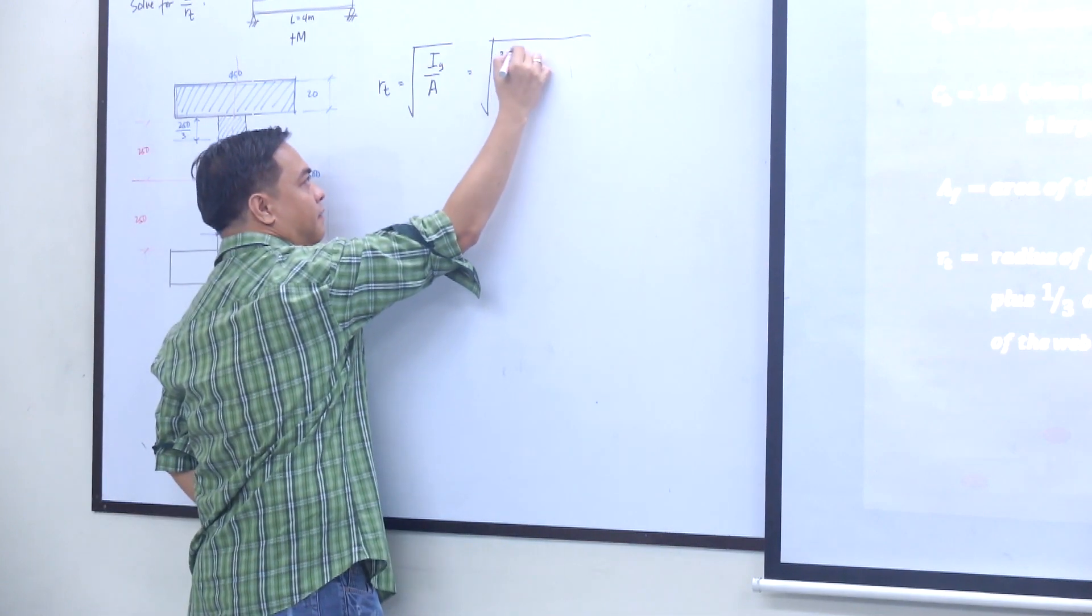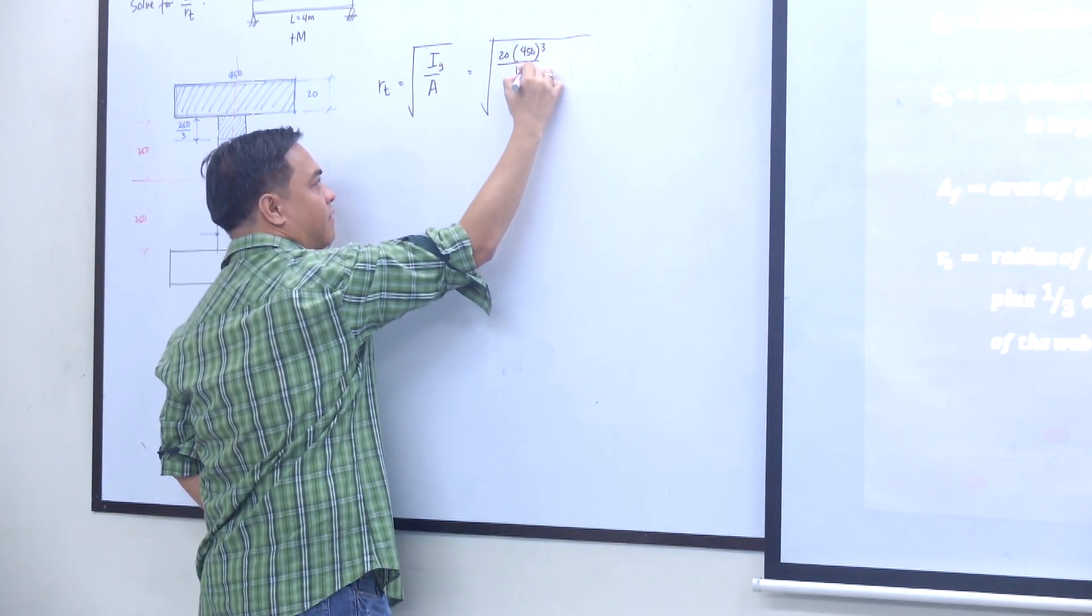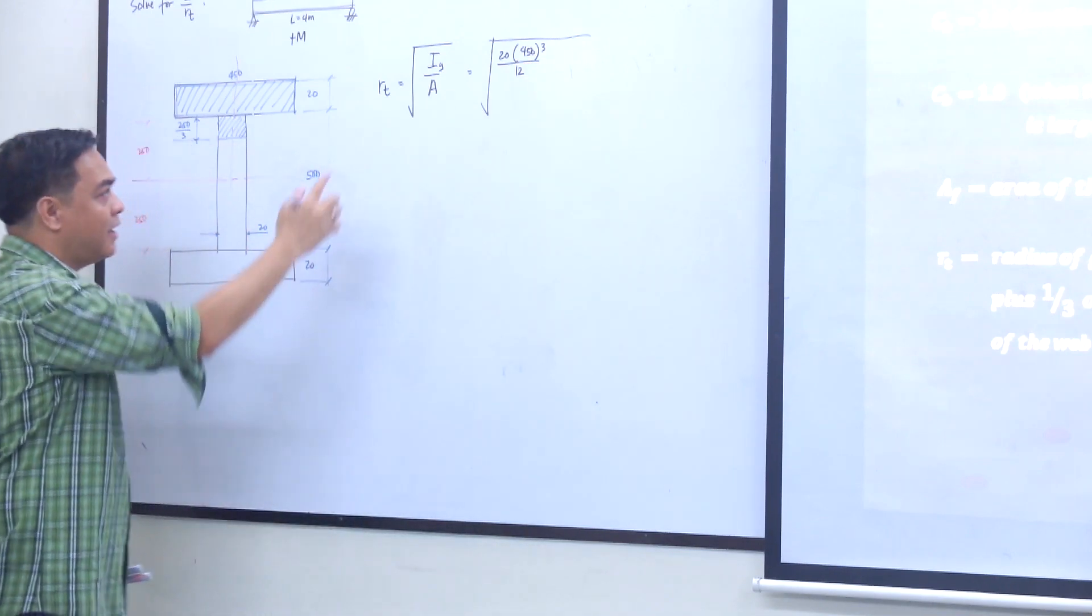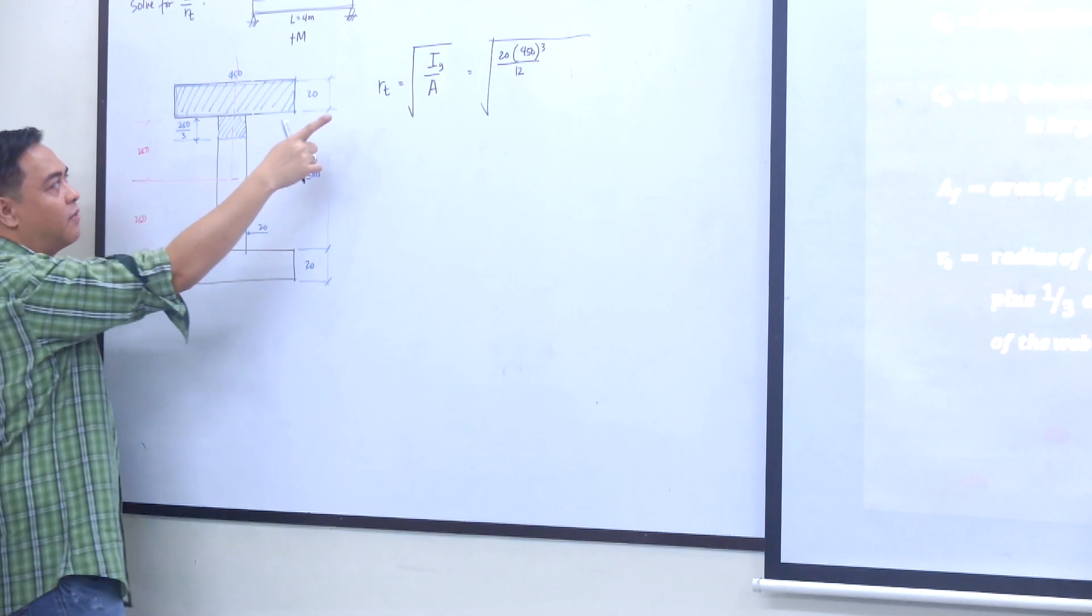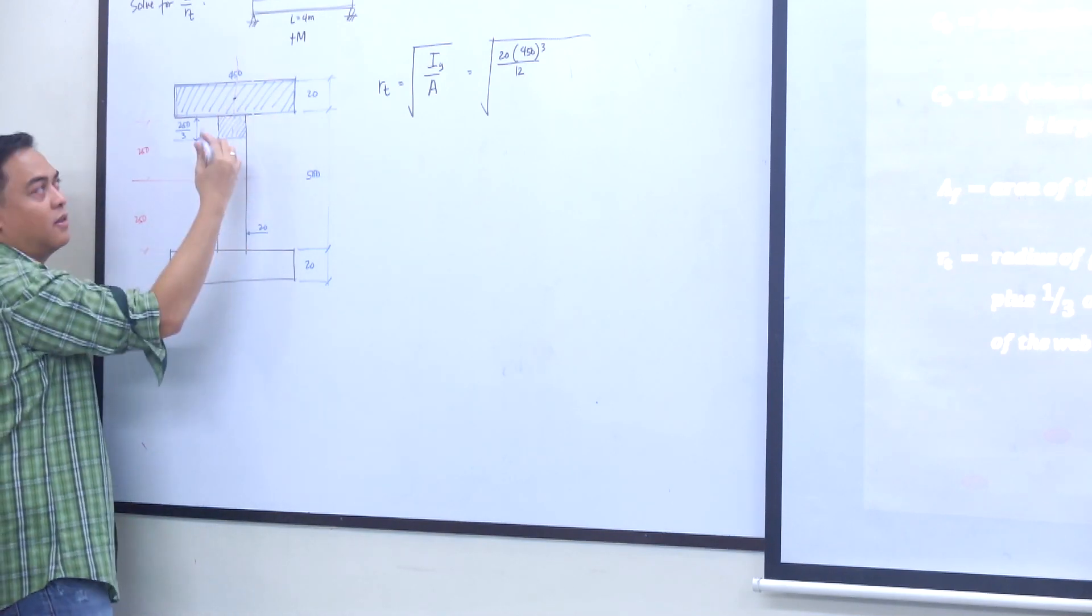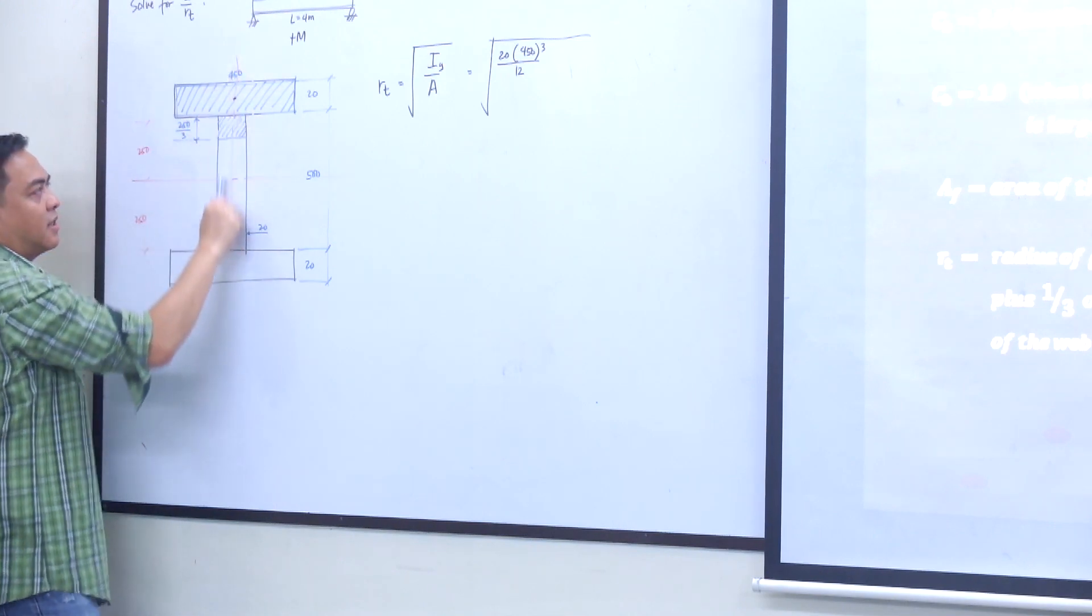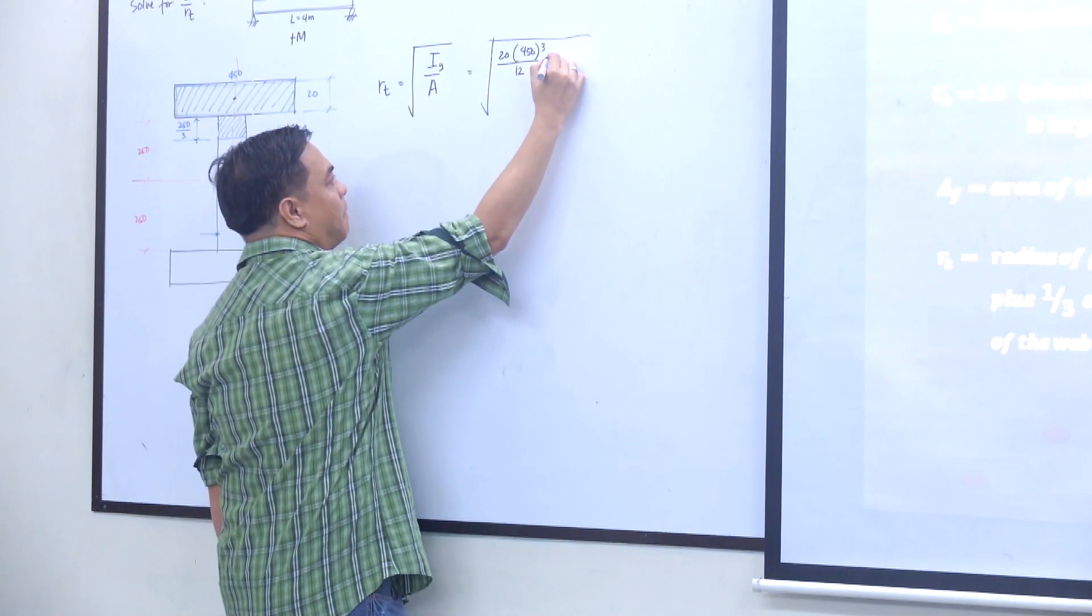450 times 20 cubed over 12. I need to transfer that inertia. Where is the centroid of that flange? Here. So I need to transfer it down. The axis is on the plane of the web.